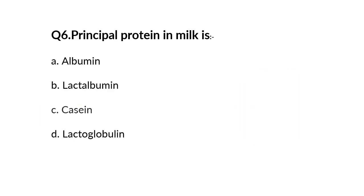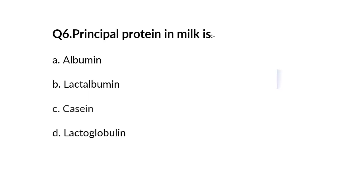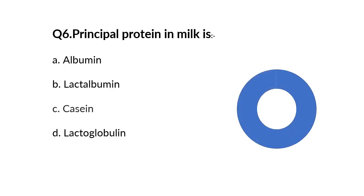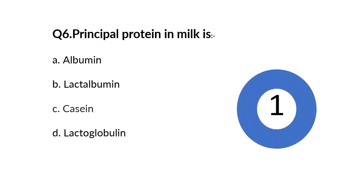Question number 6. The principal protein in milk is A albumin, B lactobulin, C casein, D lactoglobulin. Answer is C casein.